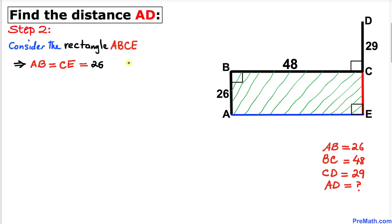According to the definition of rectangle, this side length AB is the same as this side length CE. If this side length is 26, this has got to be 26 as well. Moreover, this side length BC is the same as this side length AE.